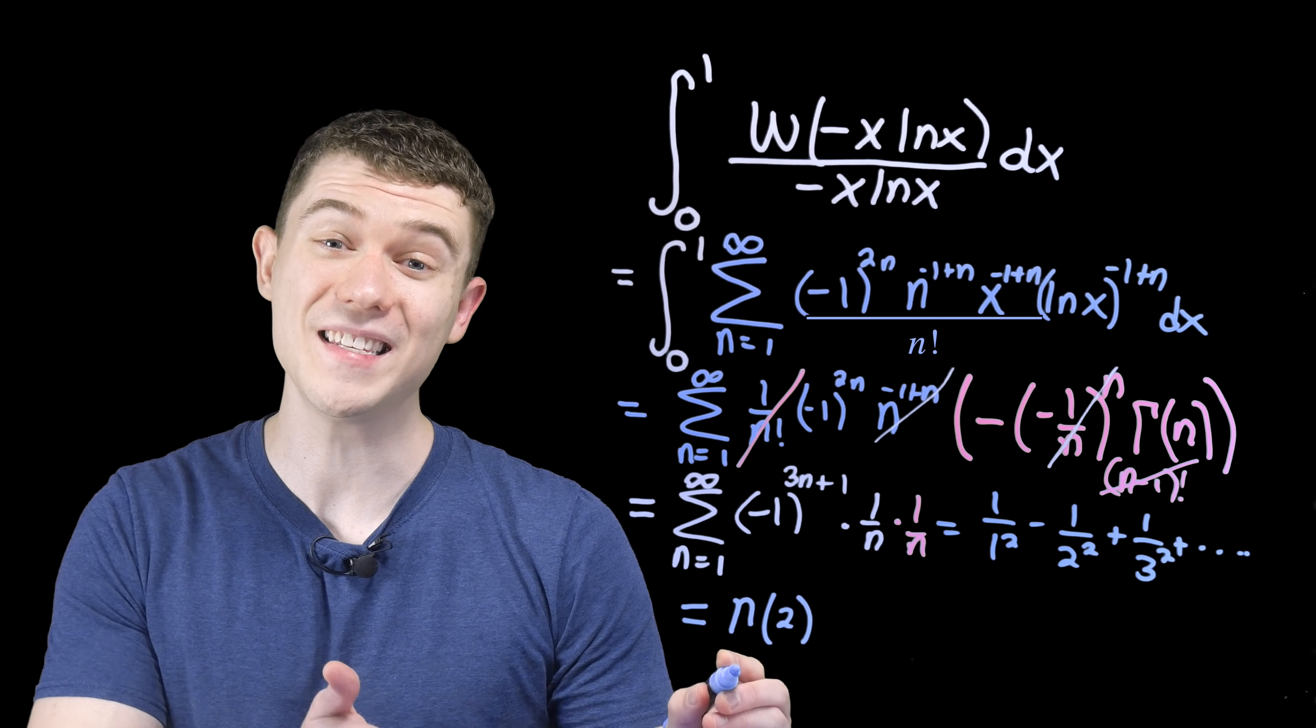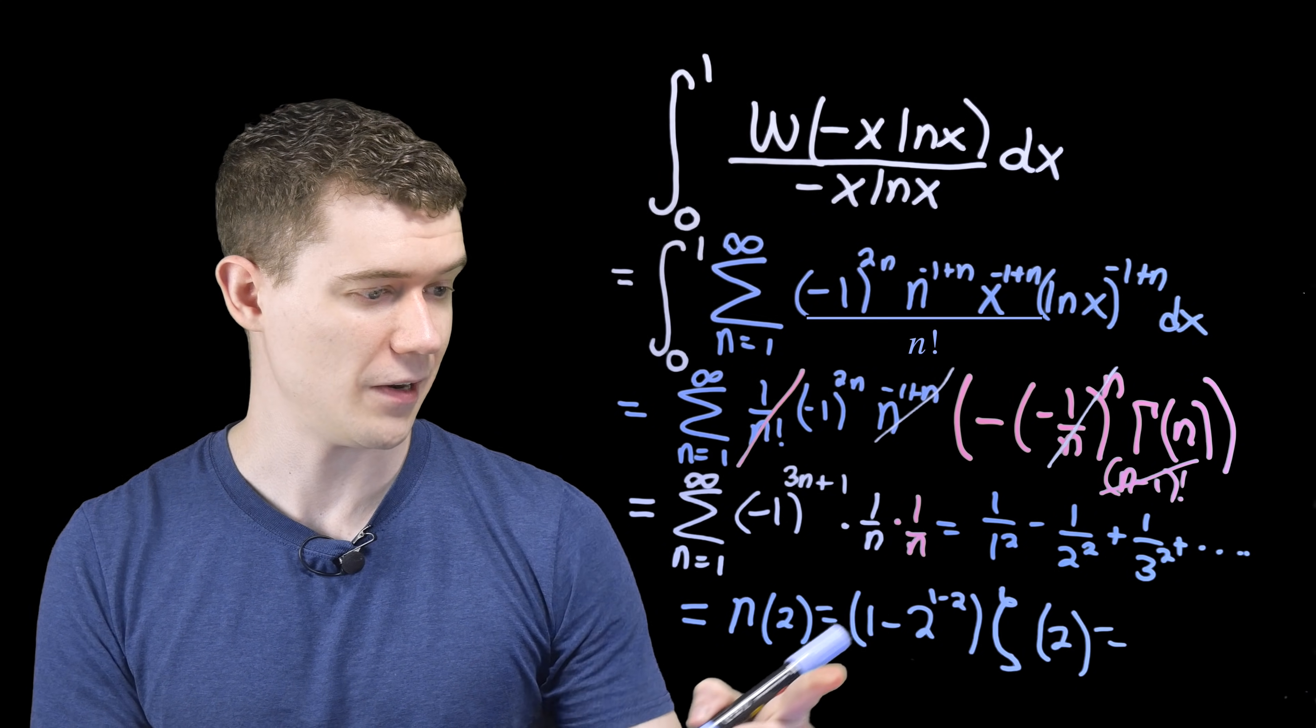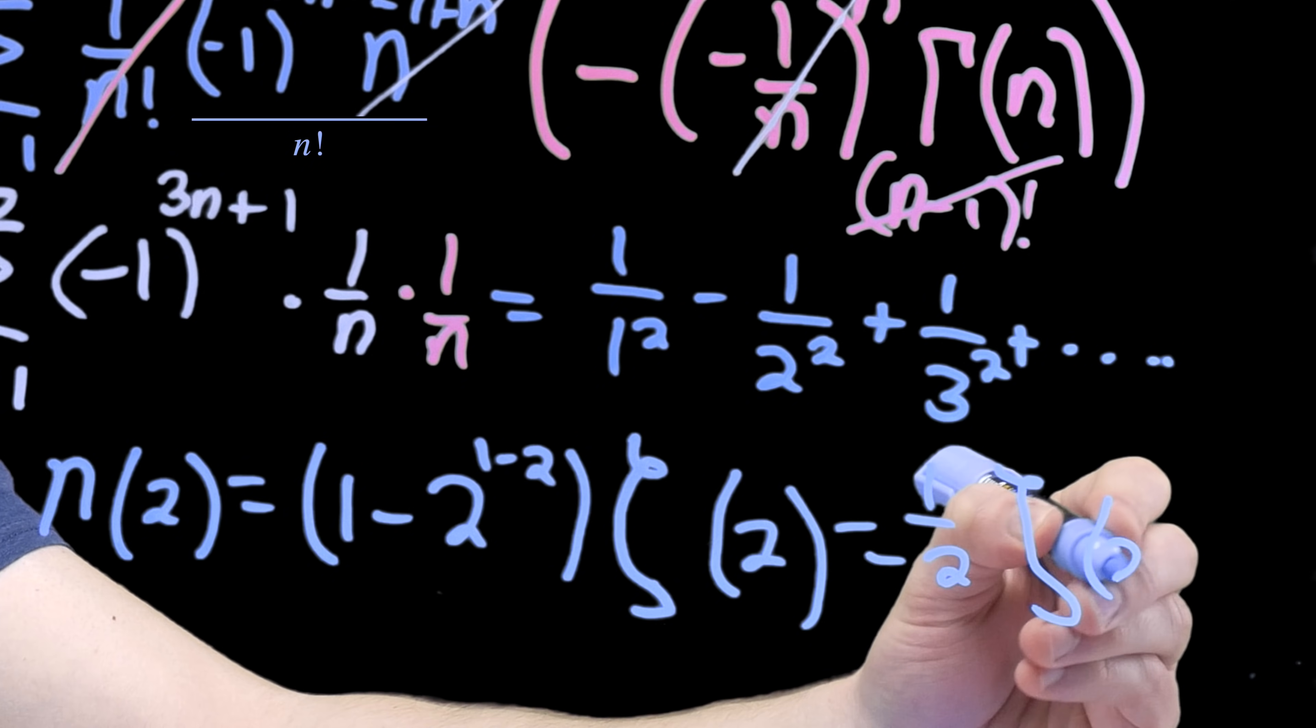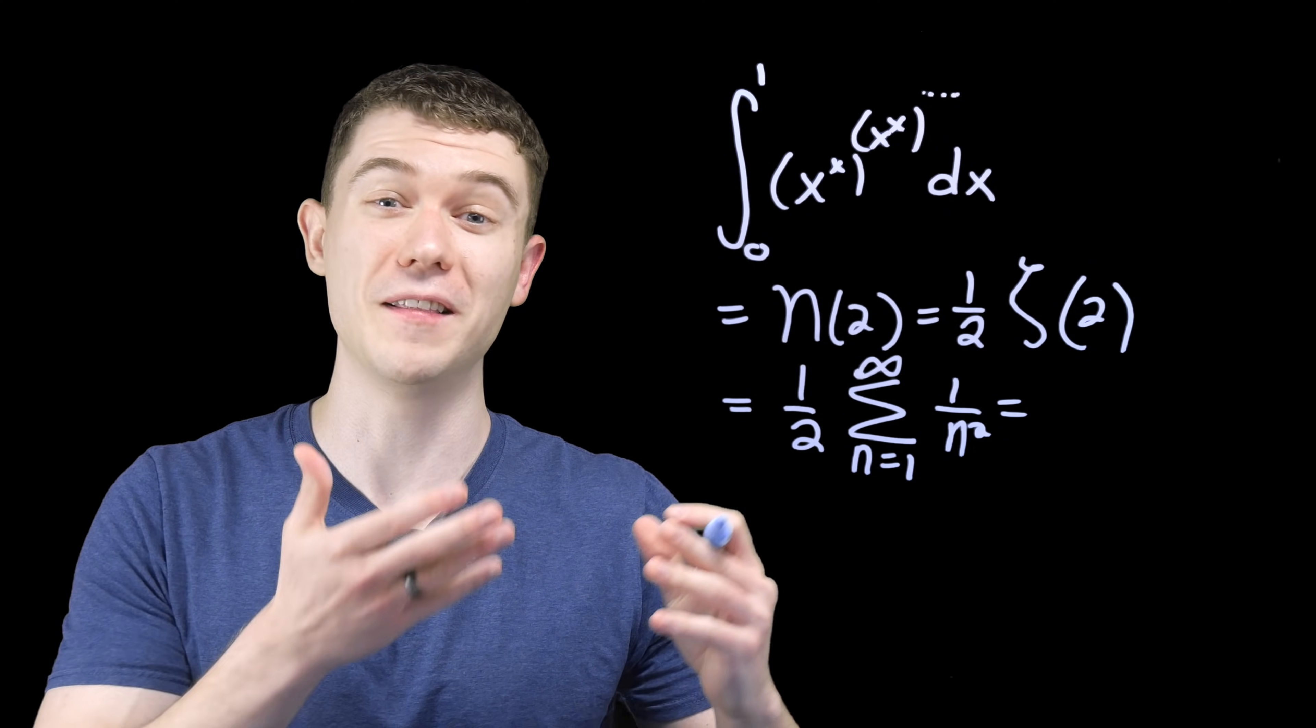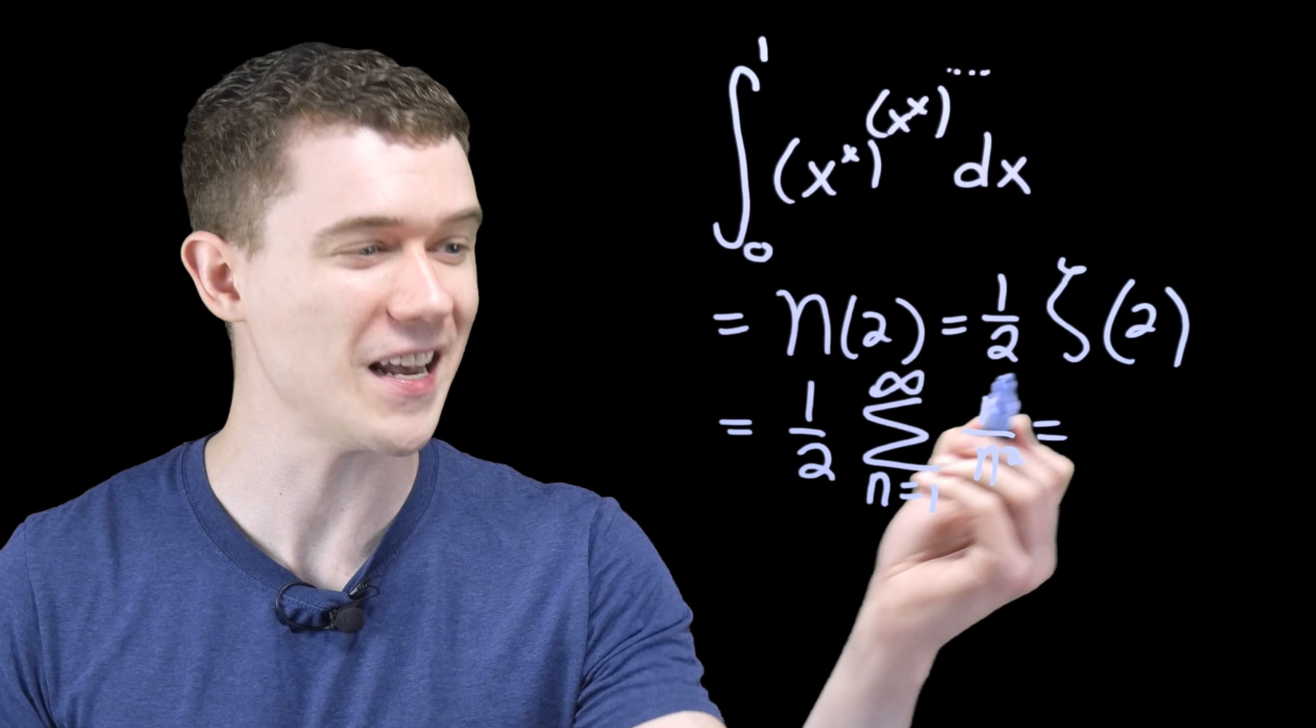And we have that relationship between the eta function and the Riemann zeta function. And if you compute this, this is a half. So we have one half of the Riemann zeta function at two. And so we're finally here. Our original problem, which we rewrote using the Lambert function, integrated using the gamma function, defined it as the eta function, which is one half of the zeta function.